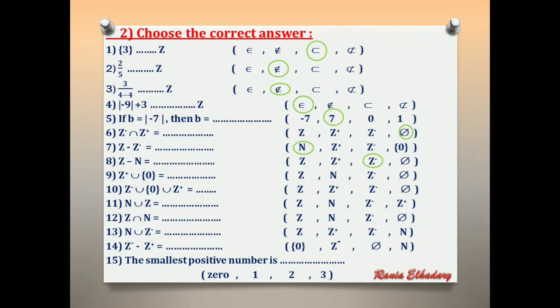Number 9: Z positive union {0}. We have 0, 1, 2, 3 and so on. The answer equals N. Number 10: Z negative union {0} union Z positive equals Z.